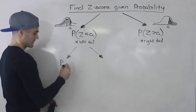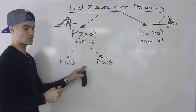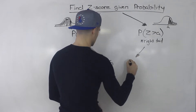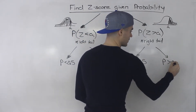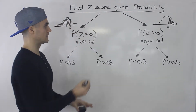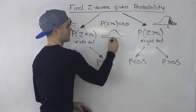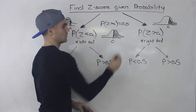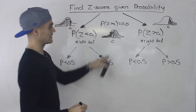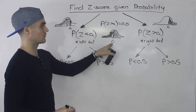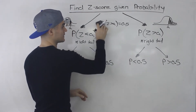The probability that we're given can be either less than 0.5 or greater than 0.5. It can also equal 0.5, which I'll mention briefly. If the probability that Z is greater than A equals 0.5, or the probability that Z is less than A equals 0.5, then that A value — that Z-score — is 0, because we're exactly at the center of the distribution. So if you see a probability equal to 0.5, the Z-score is 0.